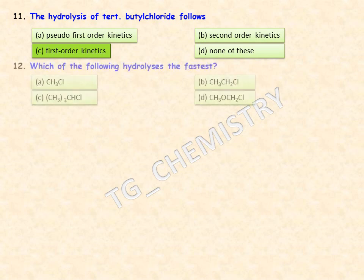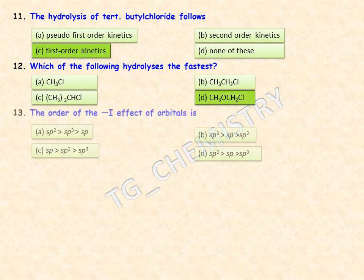Which of the following hydrolyses the fastest? Among the four given options, CH₃OCH₂Cl will hydrolyse at a faster rate compared to the others, so option D is the right answer. Regarding the order of −I effect of orbitals, the orbitals given are sp, sp², and sp³. The sp orbital has the greatest −I effect and sp³ the least, so option C is correct.